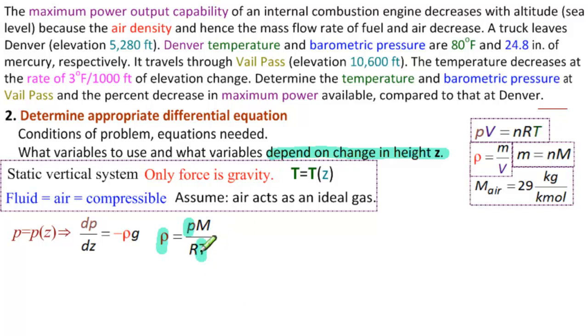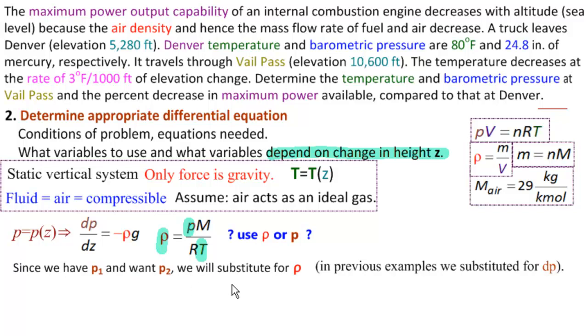So our only constants are m, r, and this minus g over here. Now we need to ask ourselves a question, which we didn't ask out loud before but actually did decide on. Do we use rho or do we use p as our variable? In our previous examples we substituted for dp. Here we are given p1 and we need p2. So let's write that down. Since we have p1 and want p2, we will substitute for rho.